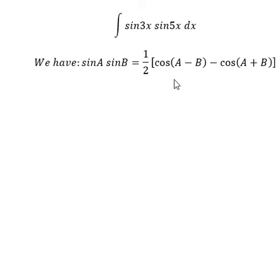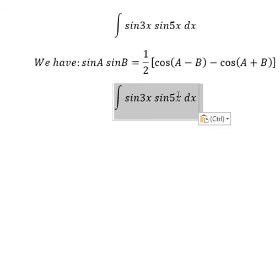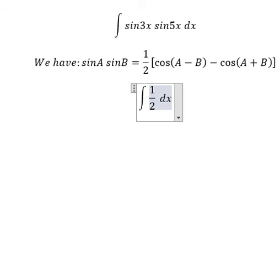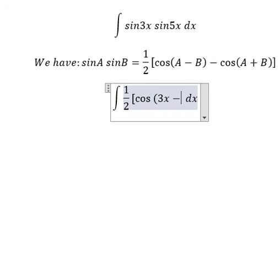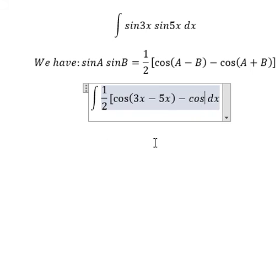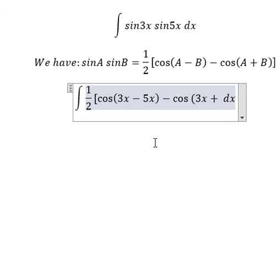So we apply this formula for this one. We will have 1 over 2 multiplied by cosine of A, that's about 3x minus 5x, minus cosine of 3x plus 5x.